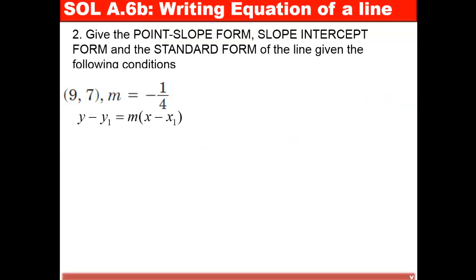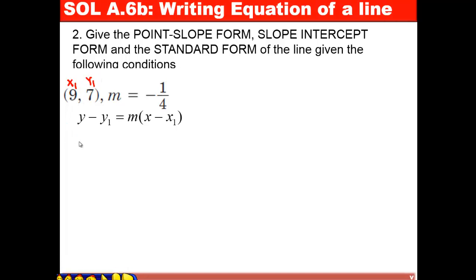Our second example: I have a point and a slope equal to negative 1/4. We label the point x₁, y₁. We replace m by negative 1/4, y₁ is equal to 7, and x₁ is equal to 9. So I will have y minus 7 equals negative 1/4 times x minus 9. This is our point-slope form.